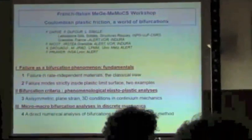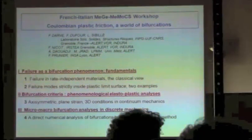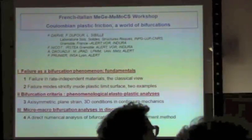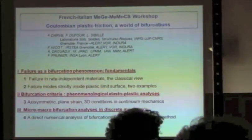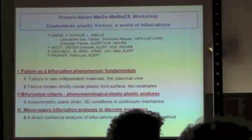The idea of this talk is based on the fact that in fluid mechanics, Navier-Stokes equations give rise to a lot of bifurcations. My point is that in solid mechanics, it is Coulomb friction which gives rise to various kinds of bifurcation. In a few words: why does Coulomb friction lead to bifurcations?